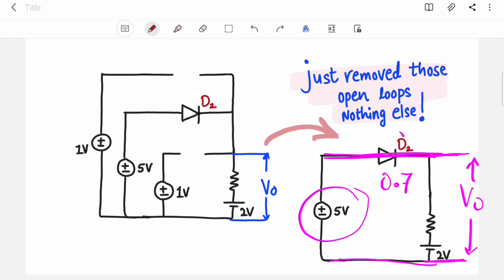Okay, considering your diode is ideal, otherwise there will be again 0.7 here—0.7 volts drop at diode if it is of silicon. But considering the diode is ideal, your Vo will be 5 volt because D2 is short circuit.